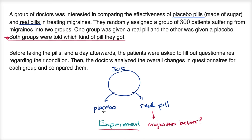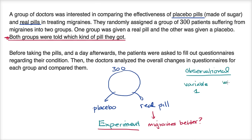Now the other options — you might ask, well, is this maybe an observational study? Remember, in an observational study, that's more of where you look at a population, you look at a group, you ask them a bunch of questions often, or you make a bunch of observations, and you see if there are correlations between two variables — variable one and variable two — and you're able to make some type of correlational statement. But you're not trying to get at causality.